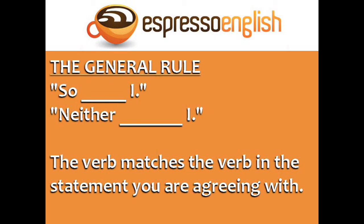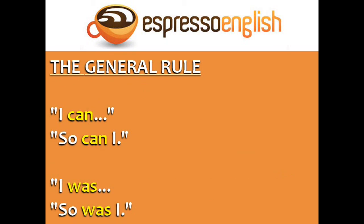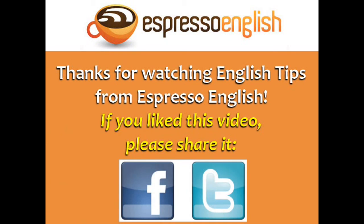The general rule is that the verb in the middle matches the verb in the statement you are agreeing with. So if the other person says 'I can', you say 'so can I'. If the other person says 'I was', your response is 'so was I'. Thanks for watching English tips from Espresso English. If you liked this video, please share it.